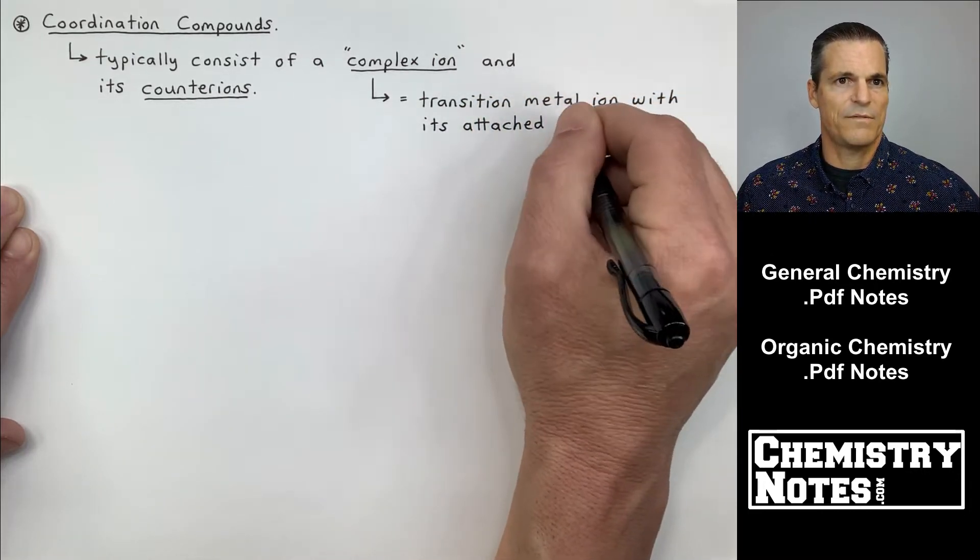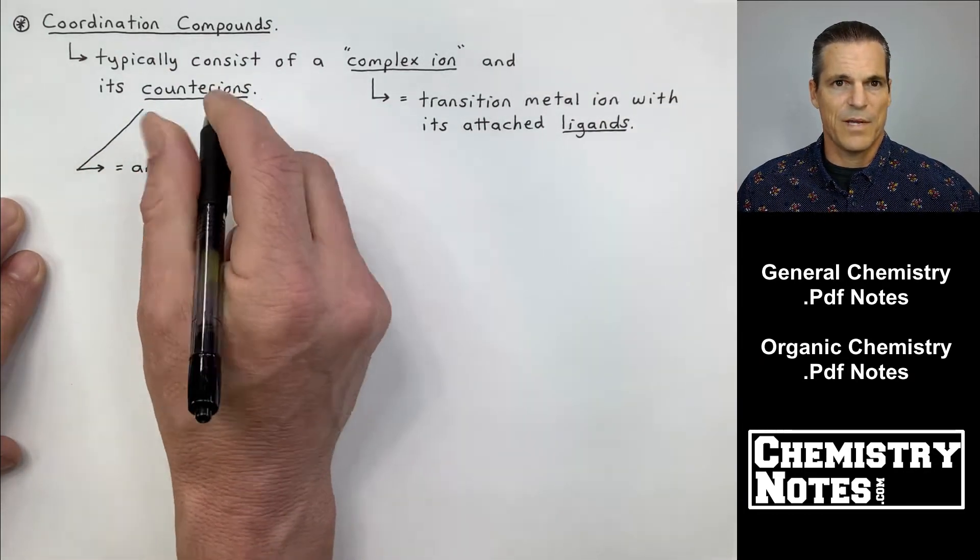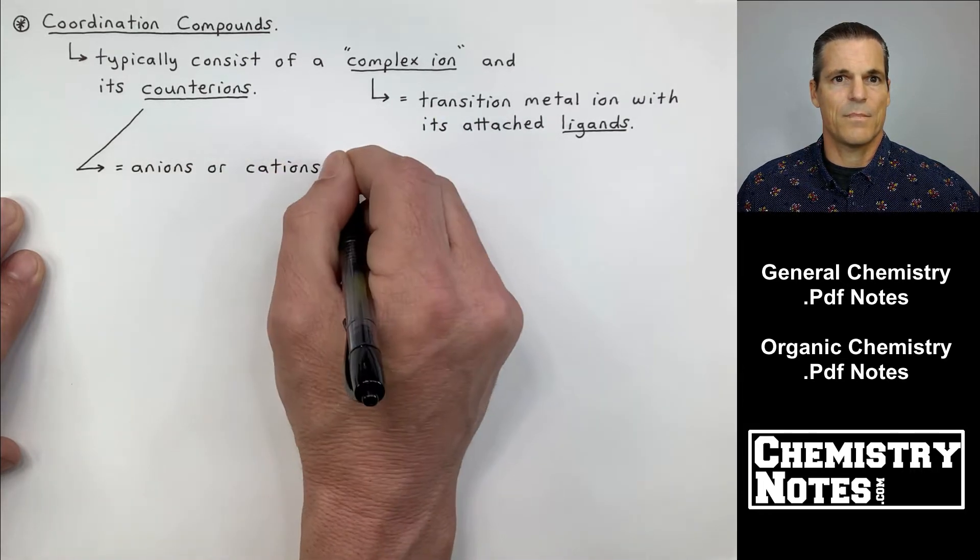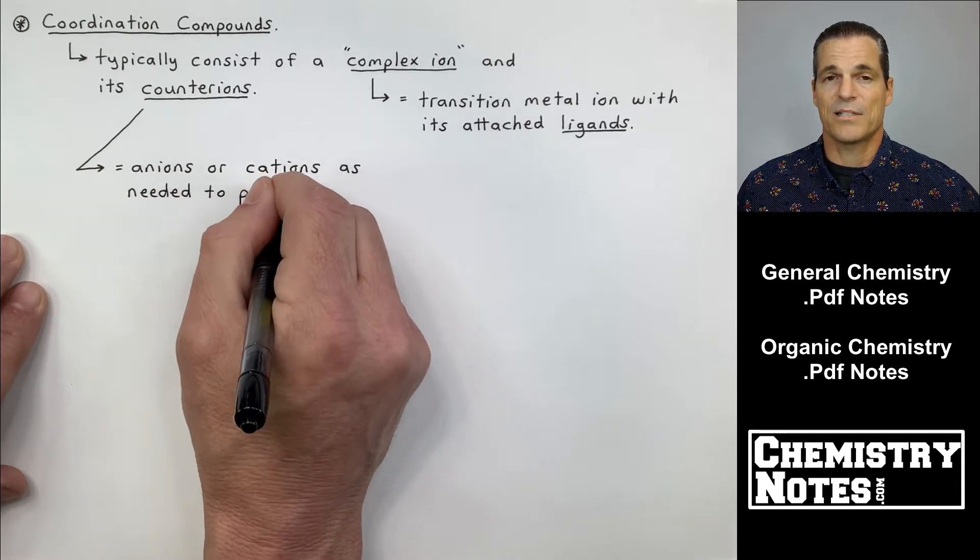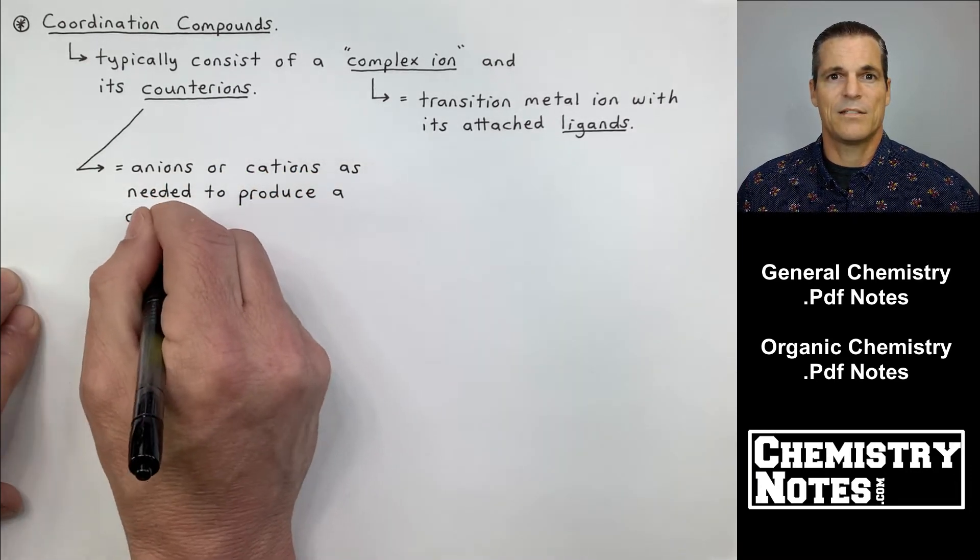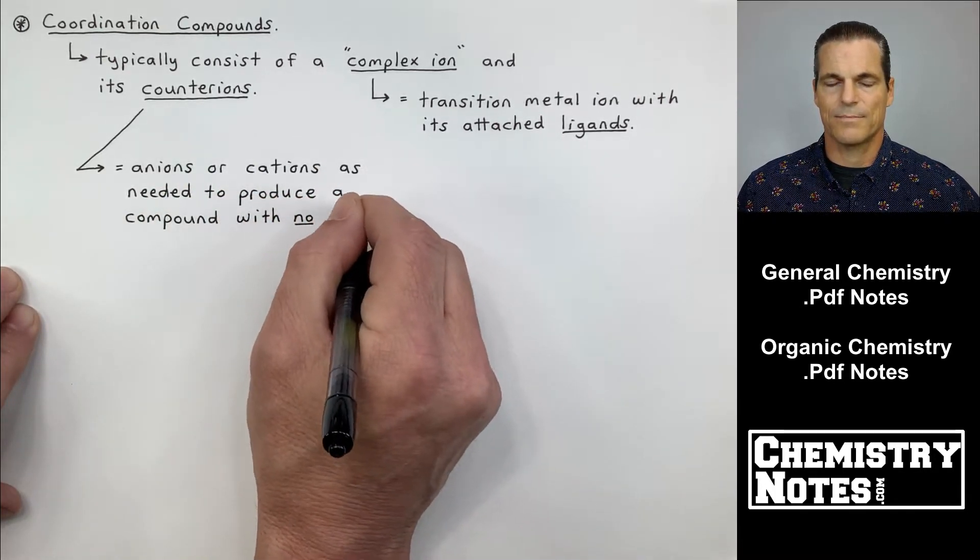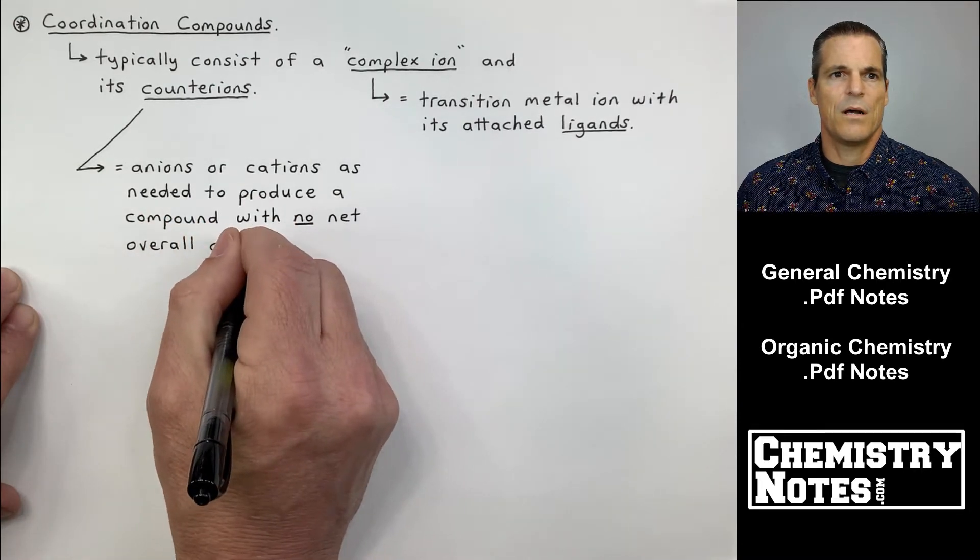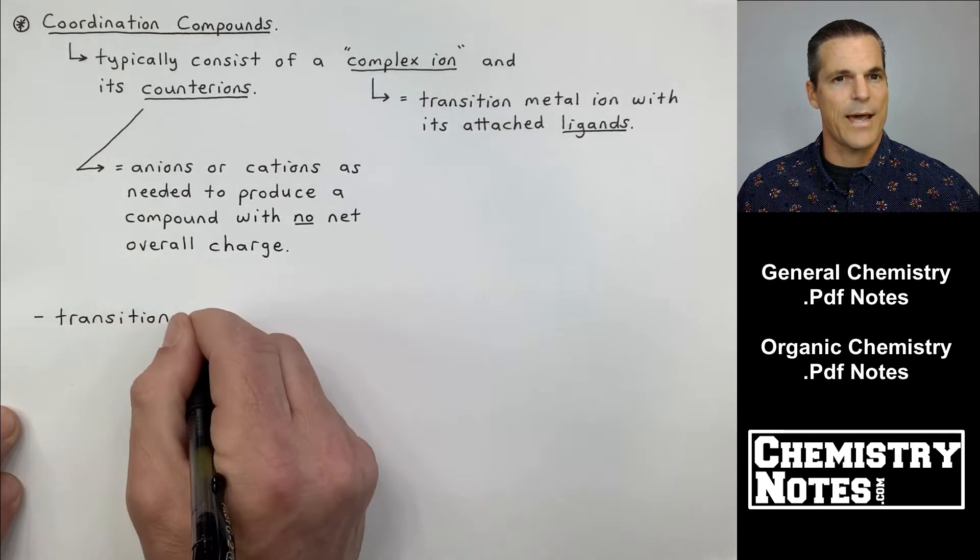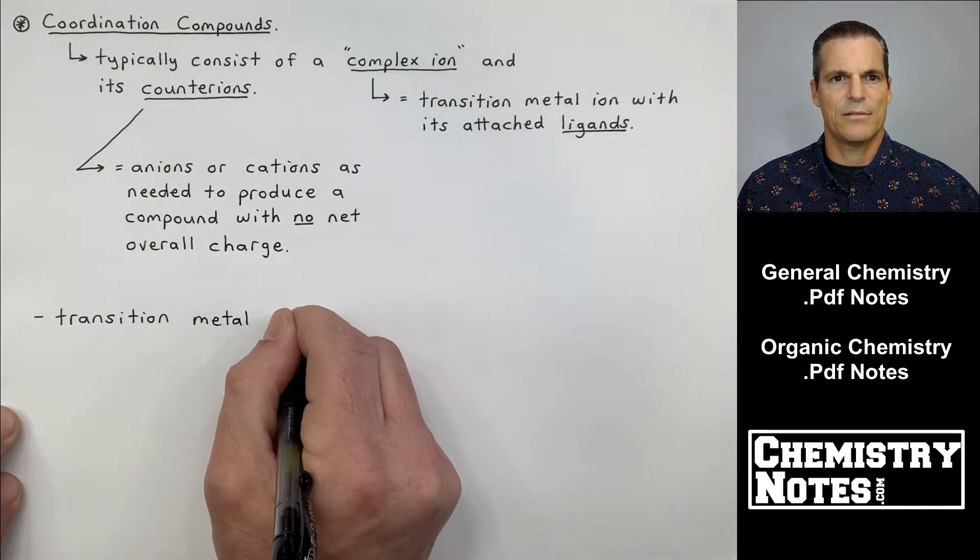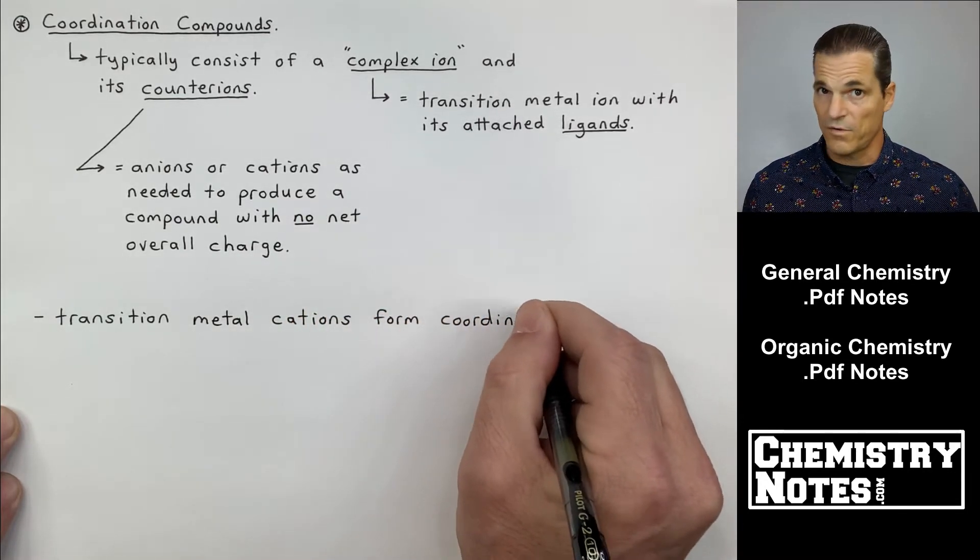This is the top of page one of today's notes. Coordination compounds. Coordination compounds typically consist of a complex ion and its counter ions. So a complex ion, that's a new phrase, what is that? It's just a transition metal ion with its attached ligands. Counter ions, what are these? Because this is also a new term. Counter ions are anions or cations as needed to produce a compound with no net overall charge. So coordination compounds are overall neutral.